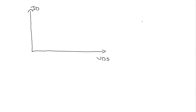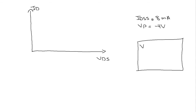We have two other parameters: one is IDSS, and in this case the value of IDSS is taken to be 8 mA. Similarly we have the pinch-off voltage Vp, which is taken to be minus 4 volt. I am going to plot the output characteristic graph of the junction field effect transistor for Vp equal to minus 4 volt and IDSS equal to 8 mA, for different values of VGS starting with VGS equal to 0 volt, then going to minus 1 volt, minus 2 volt, minus 3 volt, and finally minus 4 volt.